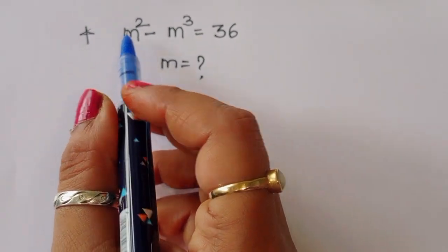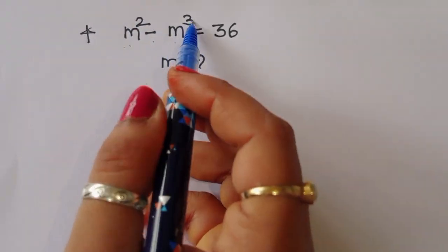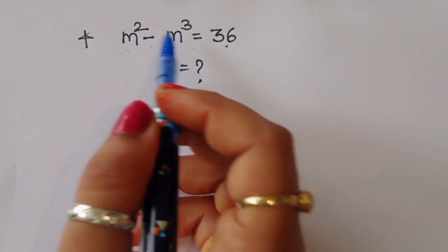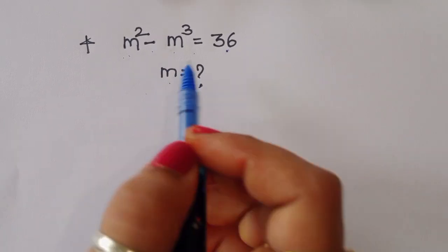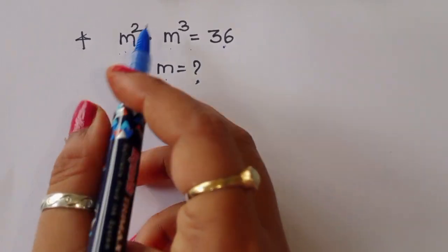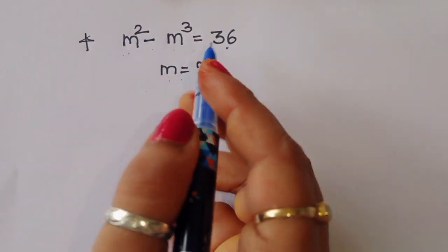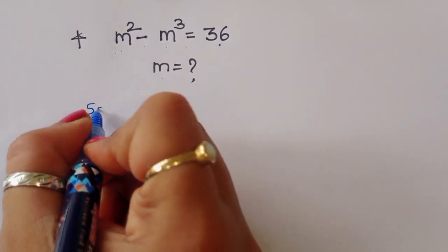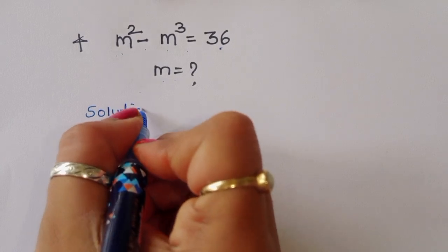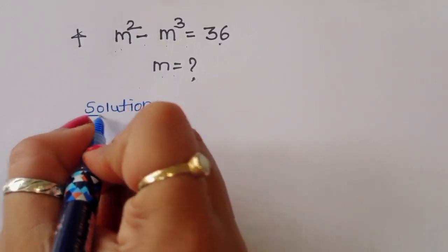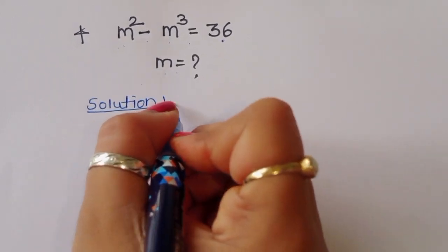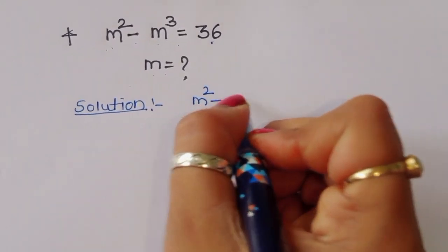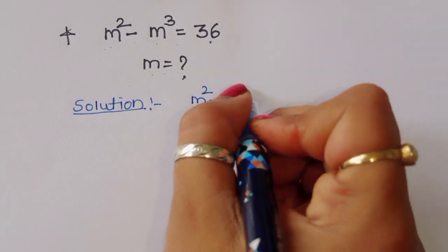The question is: given m squared minus m cubed is equal to 36, we have to find out the value of m. Let's see the solution.